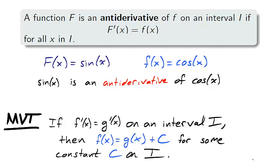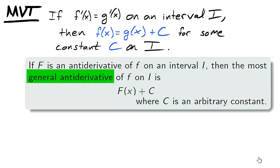In section 3.2, the mean value theorem was used to show that two functions with equal derivatives were the same up to a constant. This leads us to the definition of a general antiderivative. Once you find an antiderivative, big F for little f, then every antiderivative will be of the form big F plus c, where c is any constant.